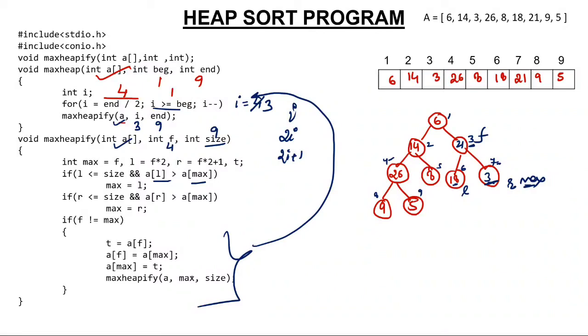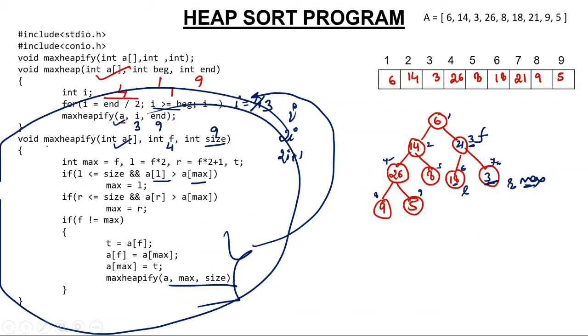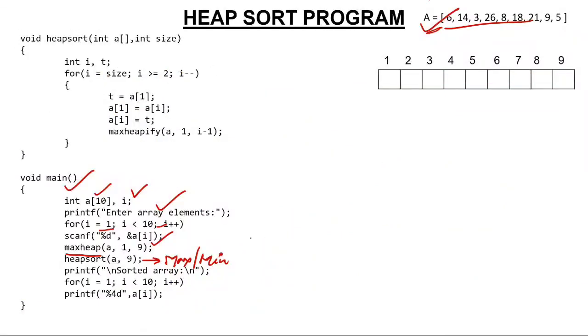Now what will happen? I will again heapify. I will again call this function in order to heapify. I have already explained you. By doing this, this entire thing will be converted to max heap. This entire thing will be converted to max heap. After that where I will go? I will go here and call heap sort. I have converted the entire array which was raw array to max heap.